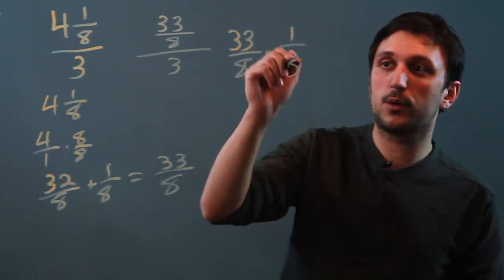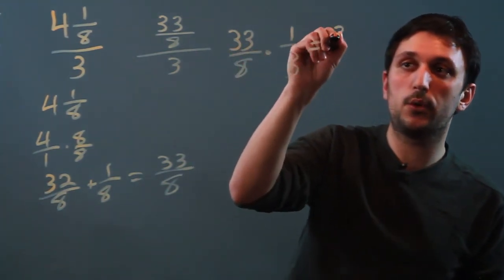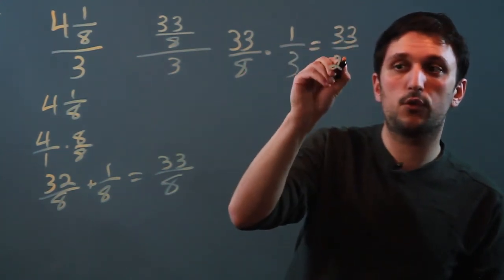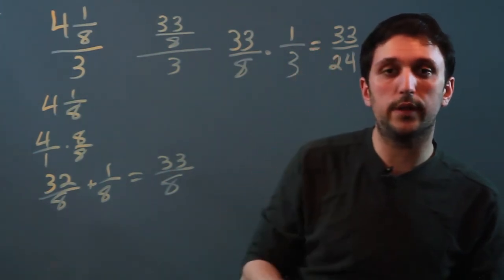So 33 times 1 is 33, and 8 times 3 is 24. So the answer is 33 over 24.